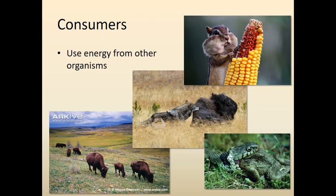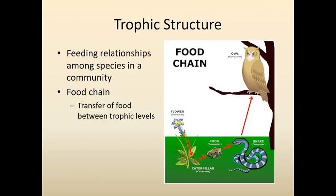Same thing goes with snakes — you can think of them as just consumers. If we go back to this food chain, this caterpillar would be what we call a primary consumer, then secondary, tertiary, and quaternary consumer. It's basically first, second, third, and fourth consumer within the food chain.